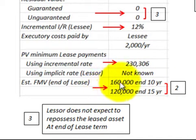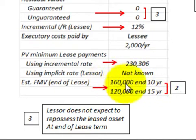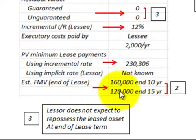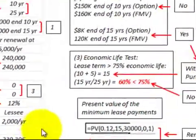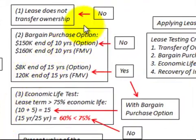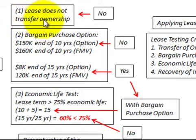The fair market value at the end of the lease: at the end of 10 years, the fair market value is $160,000, and at the end of 15 years, the fair market value is $120,000. Now let's look at our testing. First, the lease does not transfer ownership, so it fails that test.